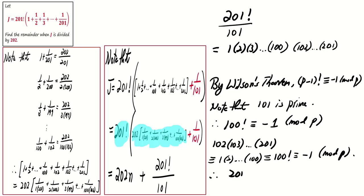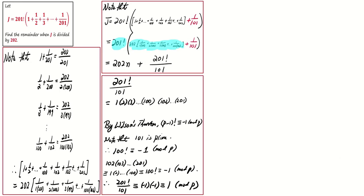Therefore, the integer 201 factorial over 101 is congruent to 1 mod 101. We have established that the integer 201 factorial over 101 can be expressed as 101k plus 1 for some integer k.